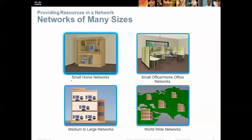There are different types of networks. We have small home networks — most of you are familiar with those. You set up a basic wireless router, get some kind of high-speed network connection, and connect your devices at home. Many of us are also familiar with small office and home networks, where you have a printer, maybe a storage device for backup files, email, and cloud services.